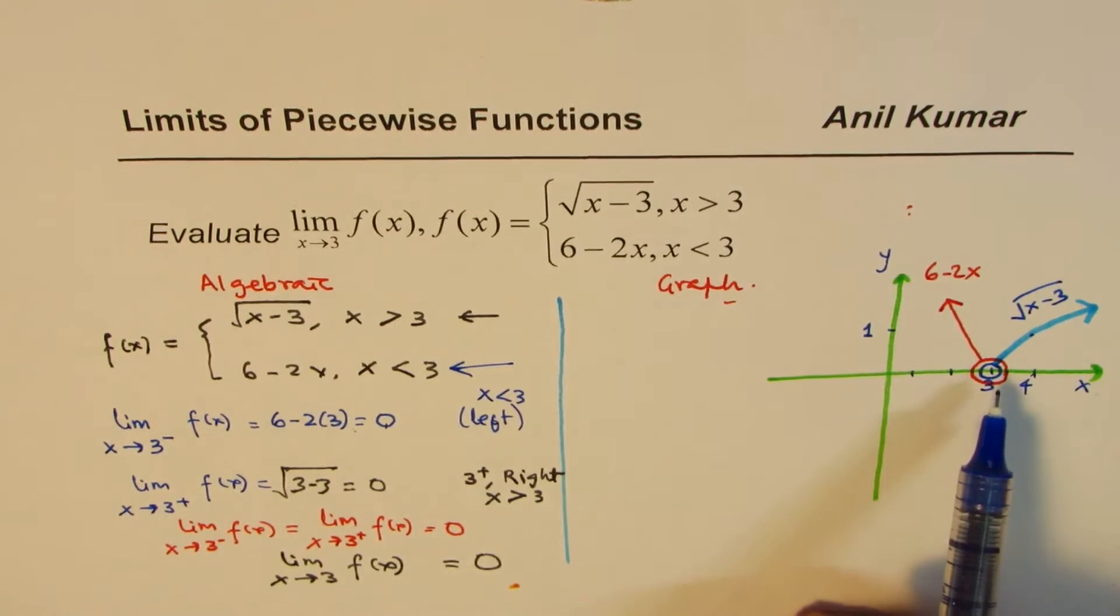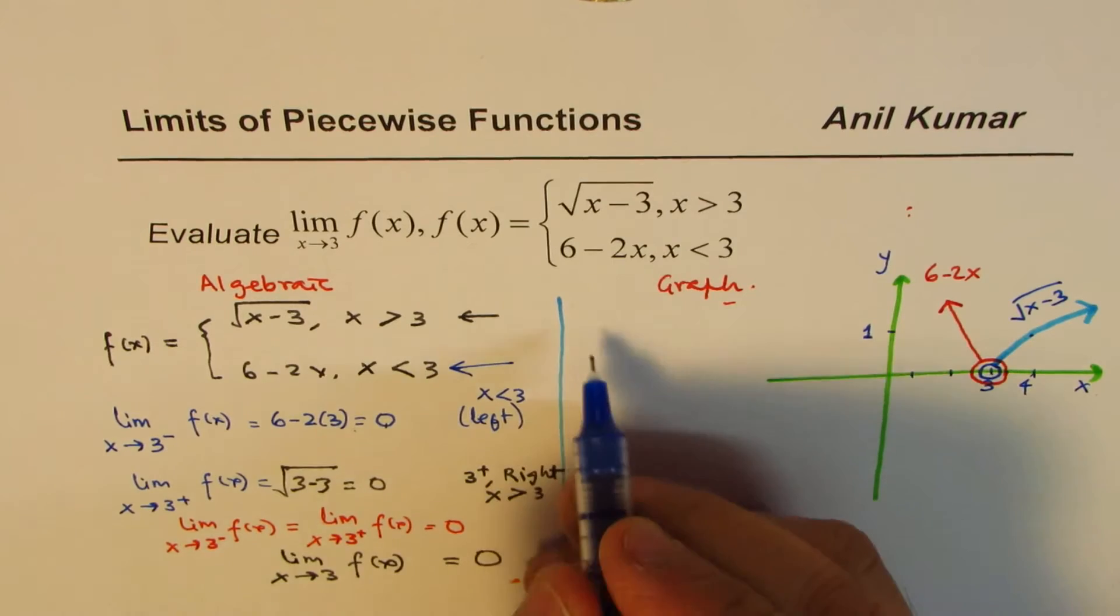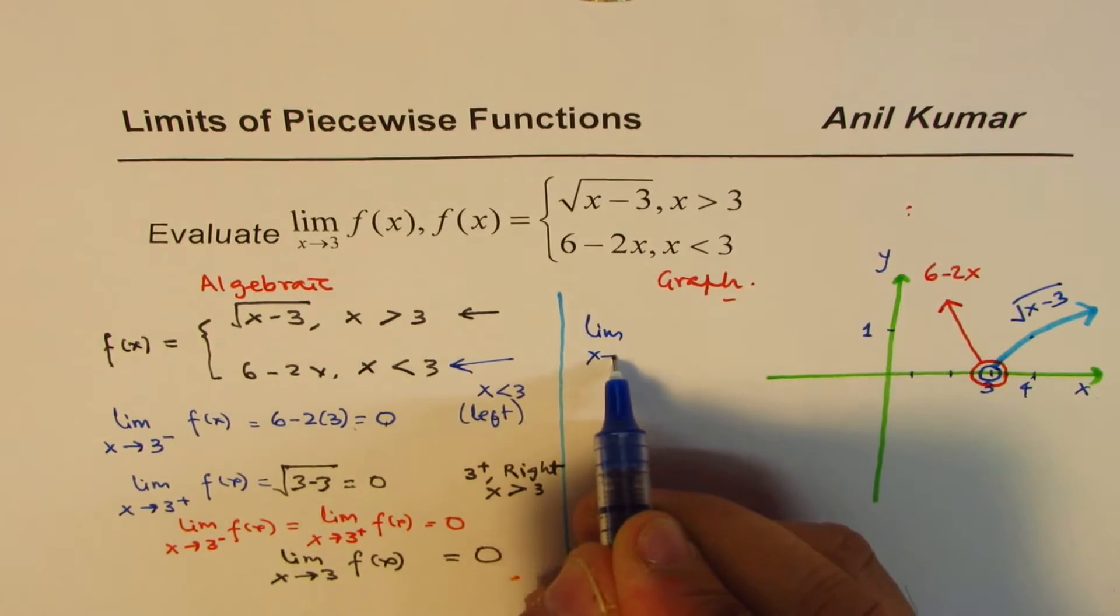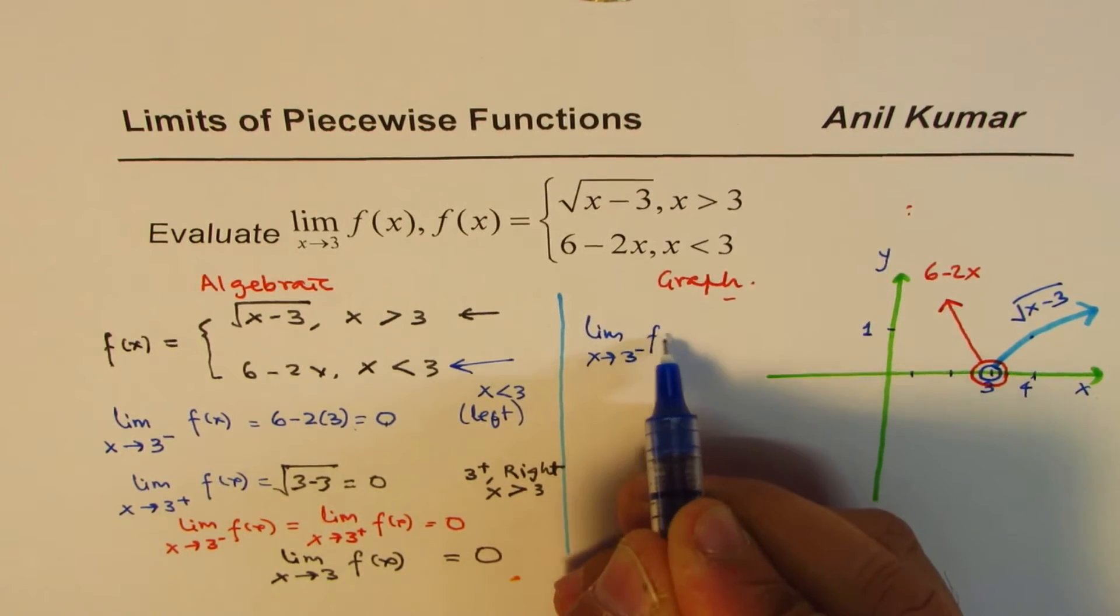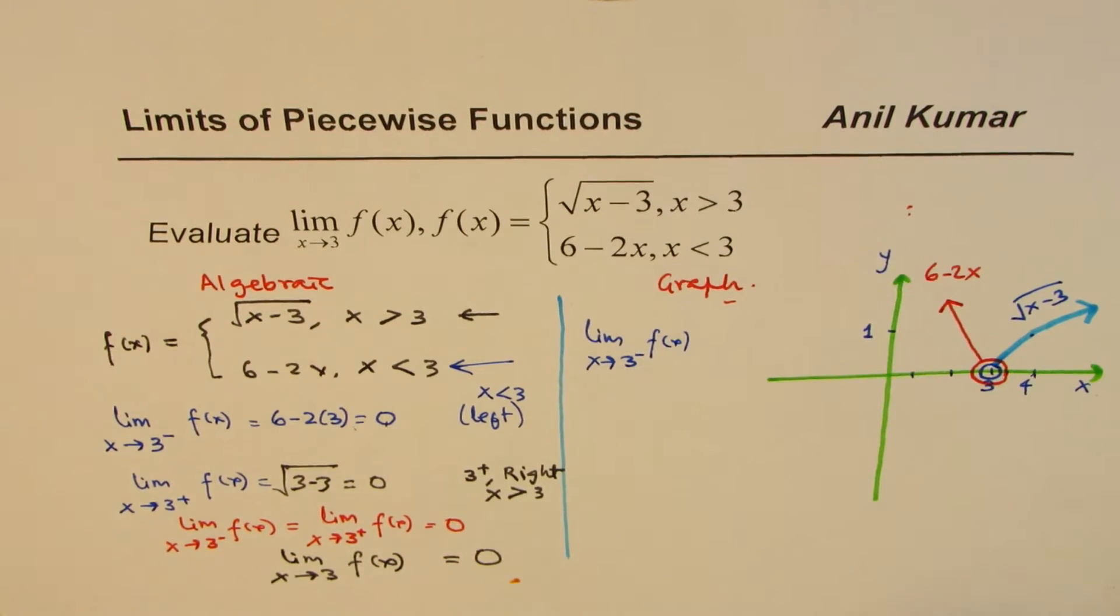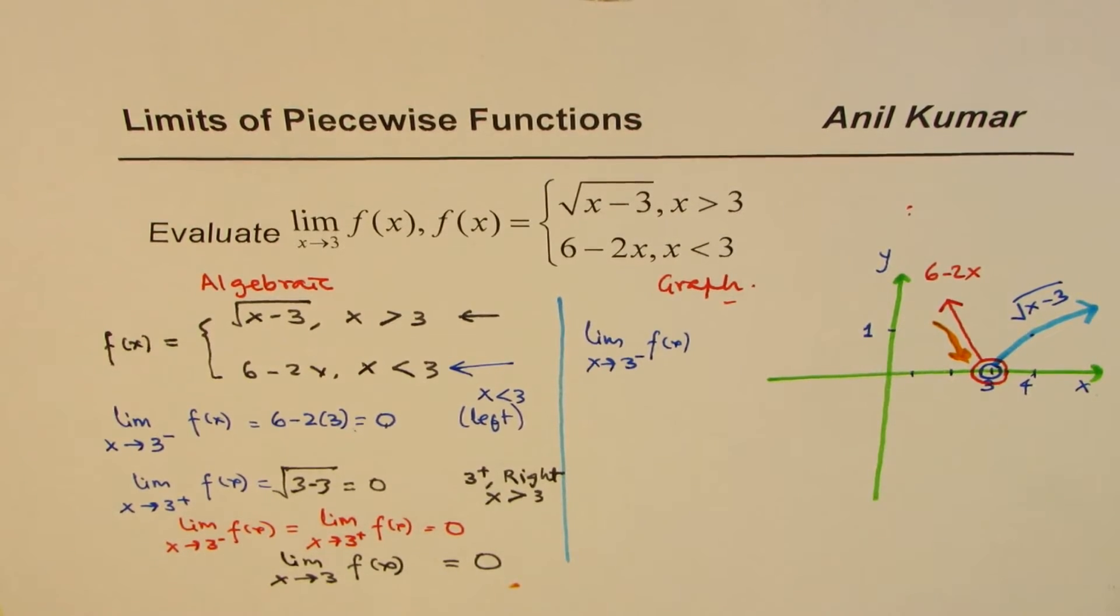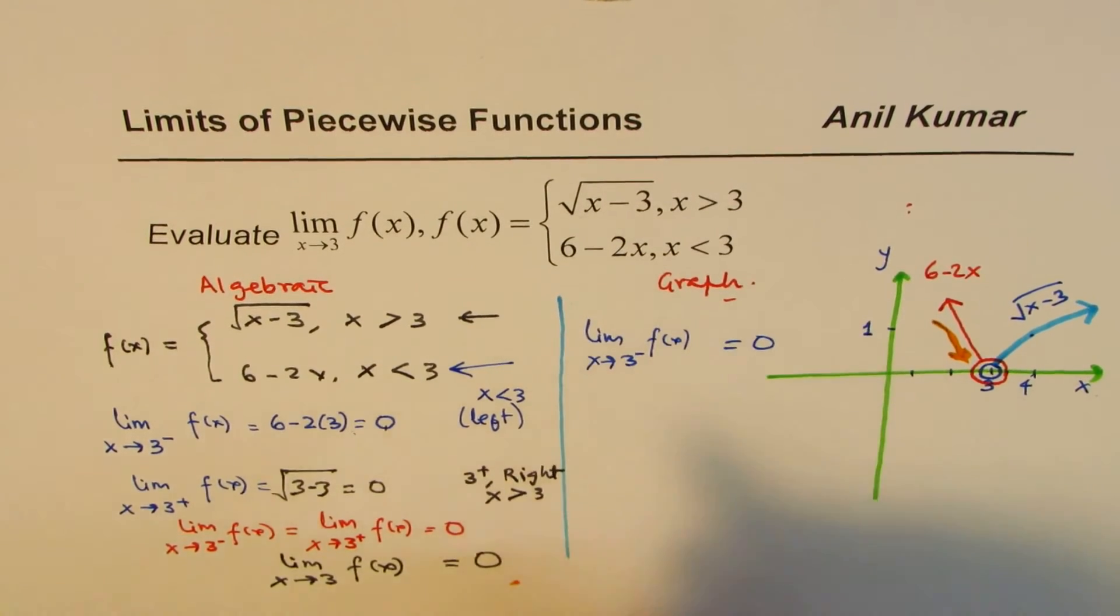Now, we can see that limit as x approaches 3 from both the sides. We can write down limit when x approaches 3 from the left side for the function. You are approaching from this side. So that means you are approaching from here. Where are you approaching? 0. So this is equal to 0.